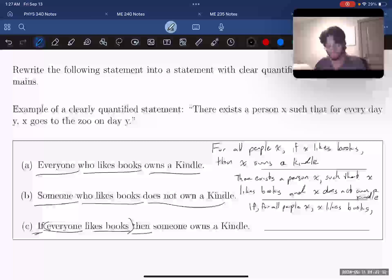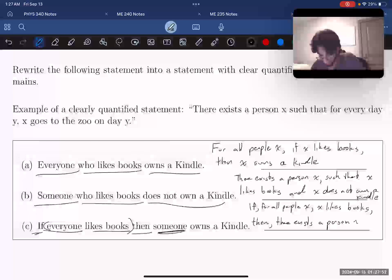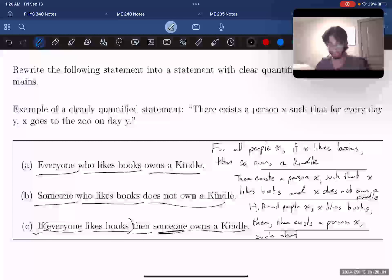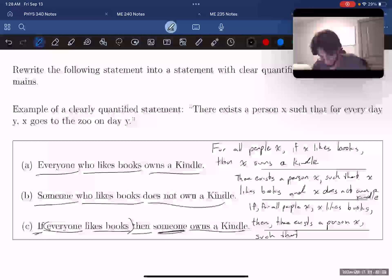...we have our then now. So we can say then, someone owns a Kindle. What does the someone mean? Well, we saw earlier that someone means there exists at least one person, an X. So then there exists a person X such that, and then what's our such that? It's that they own a Kindle. So such that, I should say, X owns a Kindle.